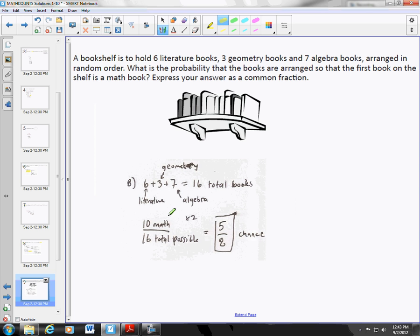Now the eighth question. So we have a bookshelf holding six literature books, three geometry, seven algebra, and they're in a random order. What is the probability that the first book is a math book? In this case, we first have to figure out how many of these are math. Well, geometry is a type of math and also algebra. So that means we have 16 total books, but only 10 of those are math books. So the probability of the first one being math would be 10 books, 10 math books out of a possible 16, which simplifies to 5 eighths. So a little more than half.